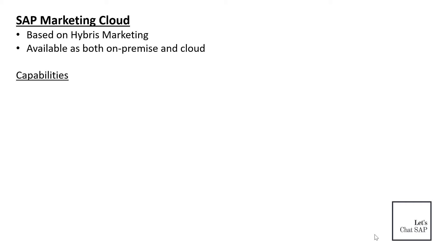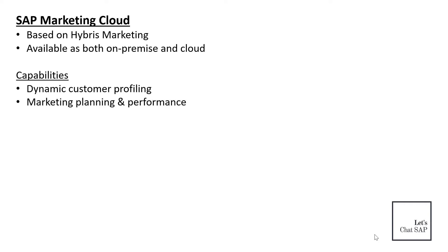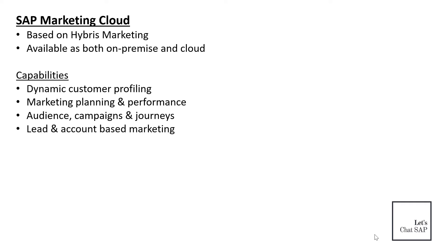Key capabilities of SAP Marketing Cloud include: dynamic customer profiling — identifying, capturing, and enriching customer profiles across all sources in a single view for real-time intent insights; marketing planning and performance — enabling collaboration across teams with transparency into plans, budgets, and performance in real time; audience campaigns and journeys — targeting and orchestrating cross-channel engagements for personalized customer experiences; lead and account-based marketing — generating, nurturing, and converting leads with close collaboration between sales and marketing; and marketing analytics to understand marketing performance and business success drivers.